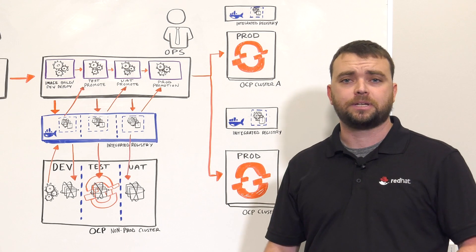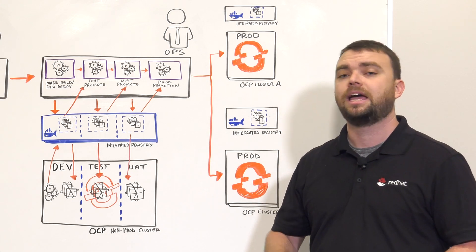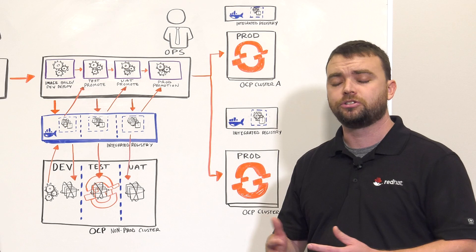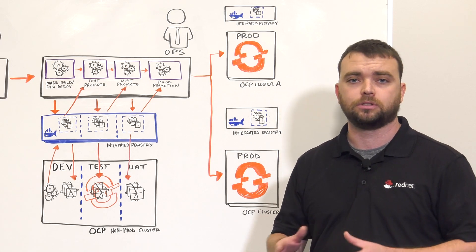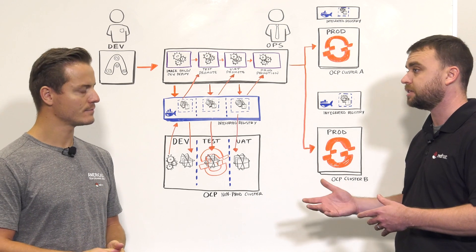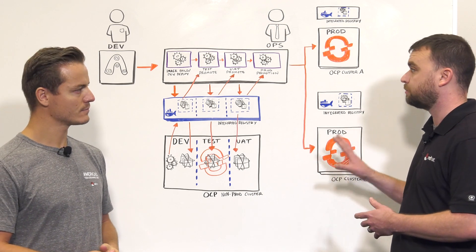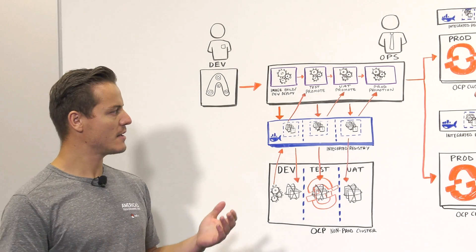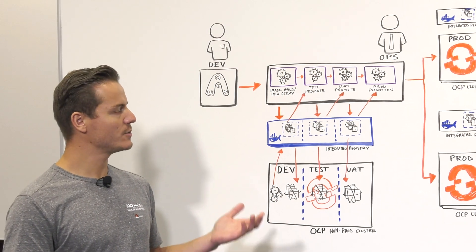So people often ask me, how do I deploy OpenShift on-premises and in the cloud? And when you start looking at that, I always recommend multiple clusters. So we're going to have one cluster located on-premises and one in the cloud in this situation with our example here on the board. So how does that fundamentally work? What do we need to do to implement that?